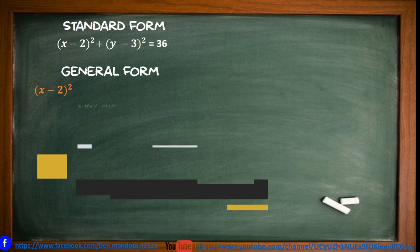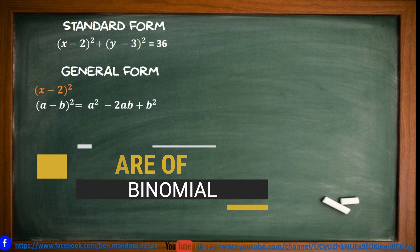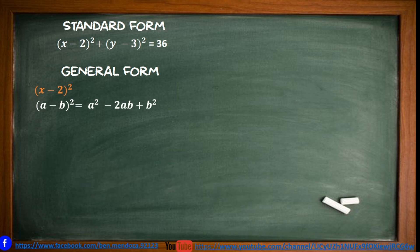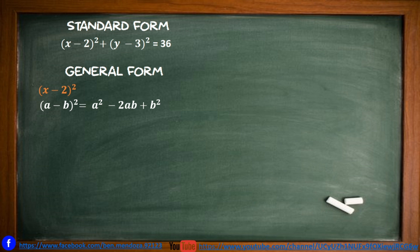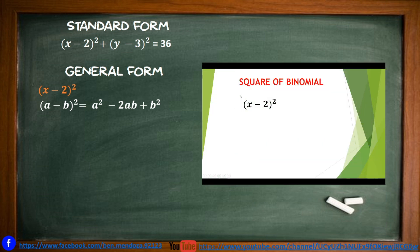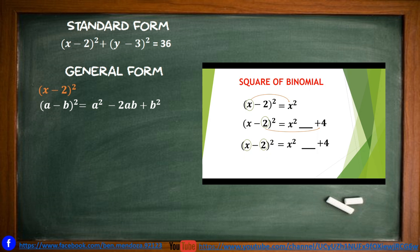Recall the square of a binomial: the quantity of a minus b squared gives us a squared minus 2ab plus b squared. Applying this, we square the first term to get x squared, square the second term to get positive 4, then get the product of the two terms: 2 times x is 2x, doubled gives 4x. Since the sign is minus, the middle term is negative, giving us x squared minus 4x plus 4.